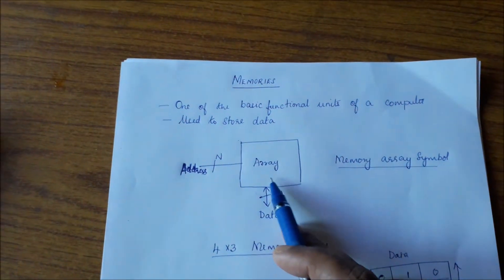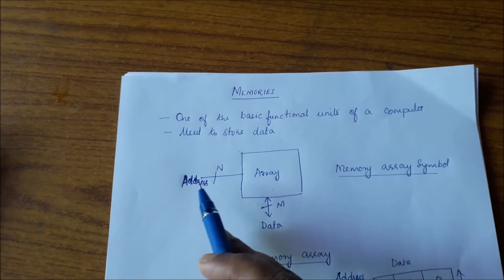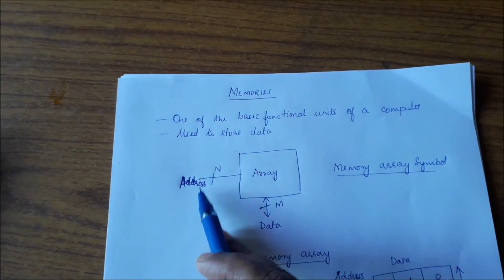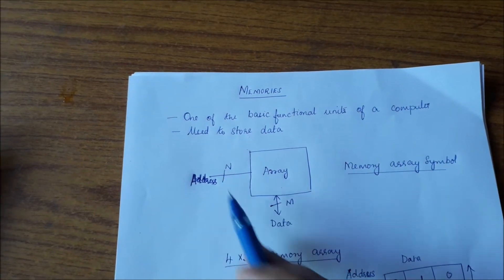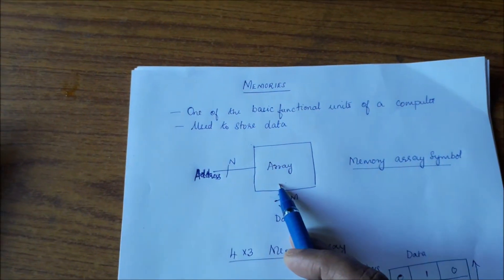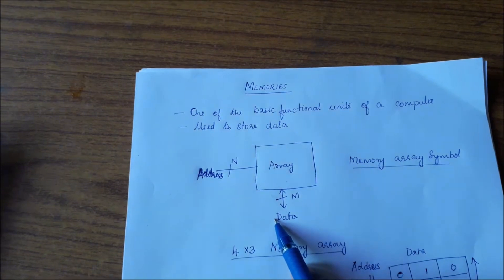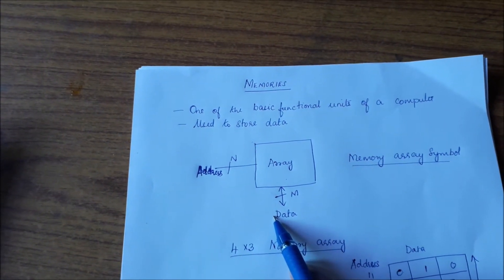It is organized as an array of memory cells. One of the inputs to the array is the address. The address here we have marked as n bits, and this data can be an input to the array during the memory write operation, or it can be an output from the array during the memory read operation.